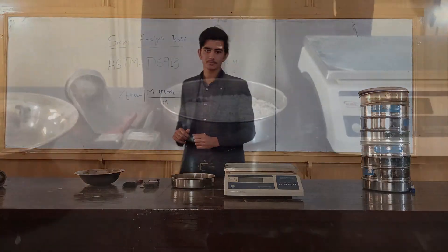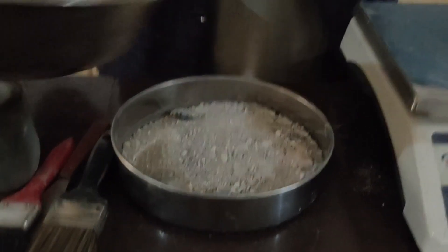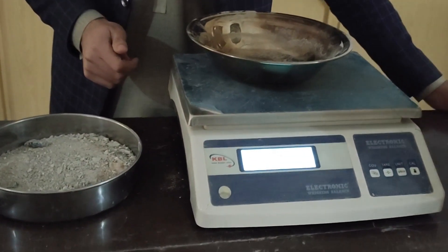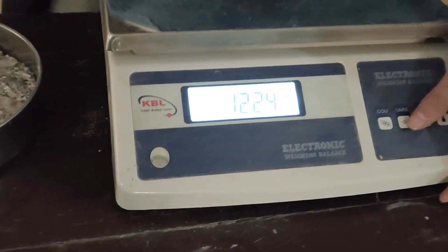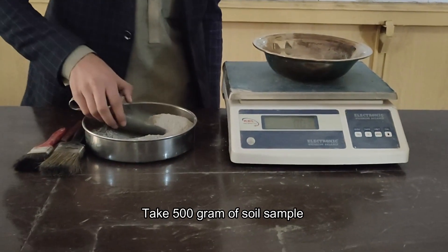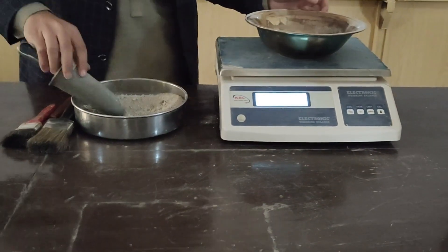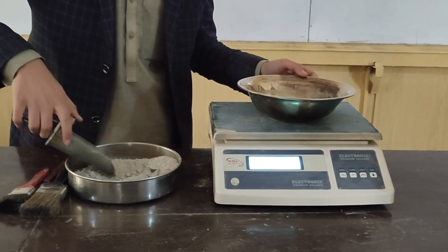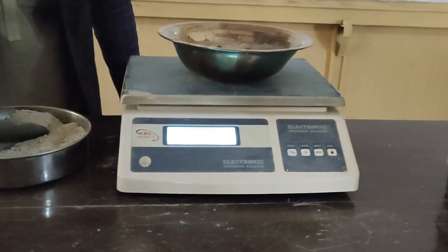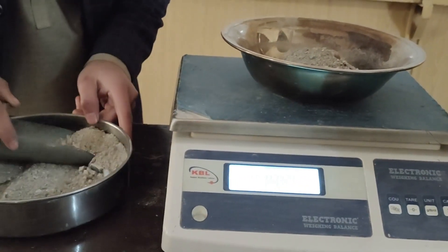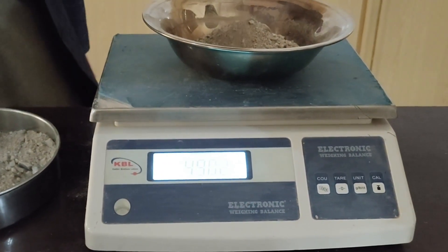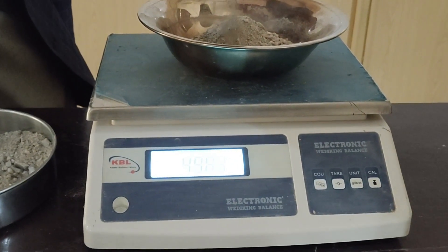Now we will proceed to perform this test. First, we will weigh the container — it's 122.4 grams. Now we will take 500 grams of sample. It's 250 grams, so we will take 250 more. It's 444 grams. Now we have almost 500 grams of sample.